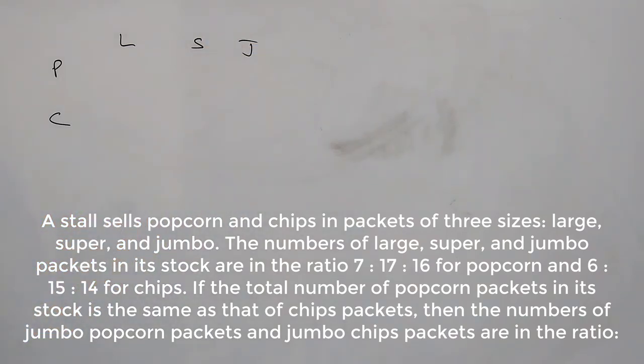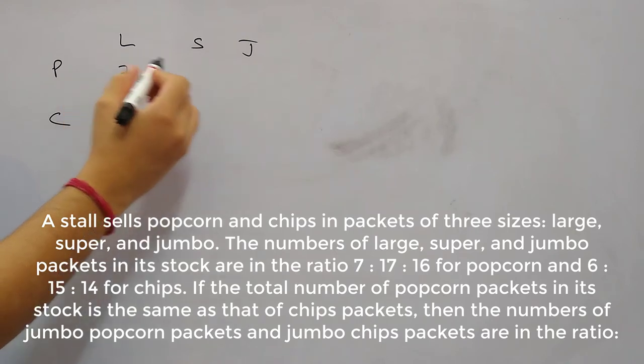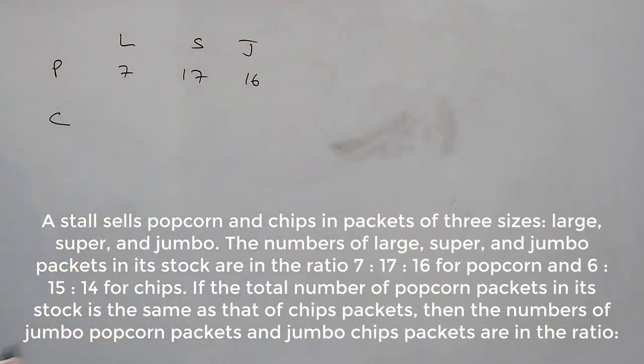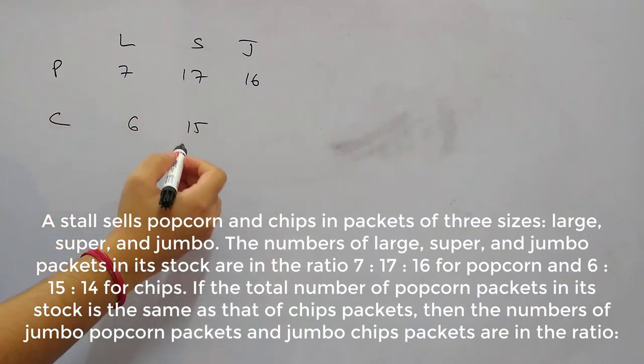The number of large, super, and jumbo packets in stock are in the ratio 7 to 17 to 16 for popcorn. So for popcorn it's given 7, 17, and 16. And also this is given for chips which is 6, 15, and 14.